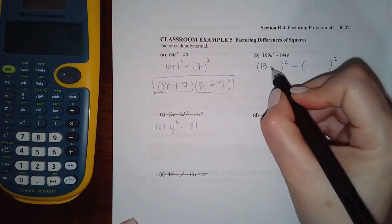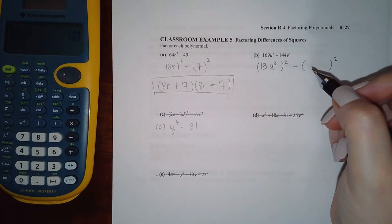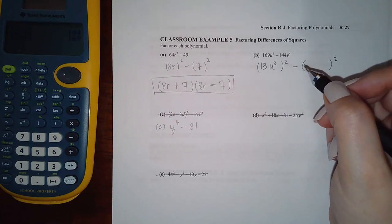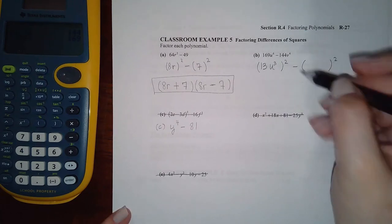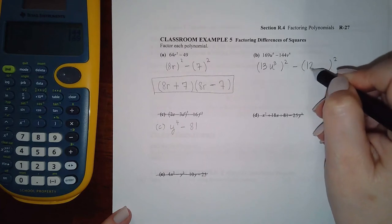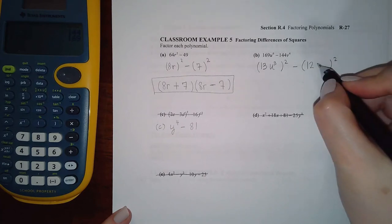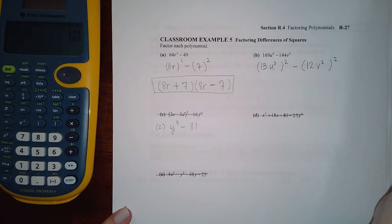Here we already know that 12 times 12 is 144, and this would have to be v squared because v squared times v squared, you add the exponents, you get v to the 4th. Okay, now that means 13u cubed goes in the front.